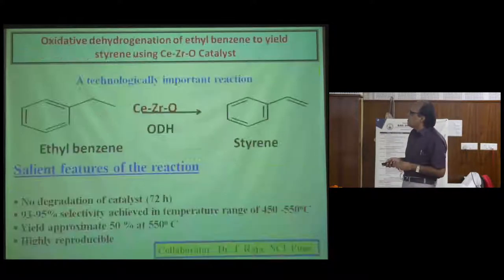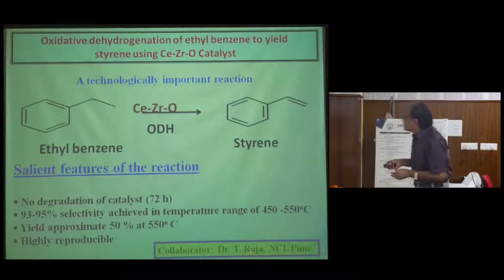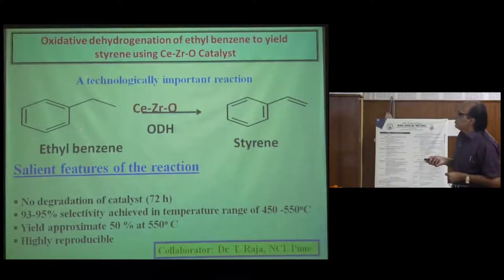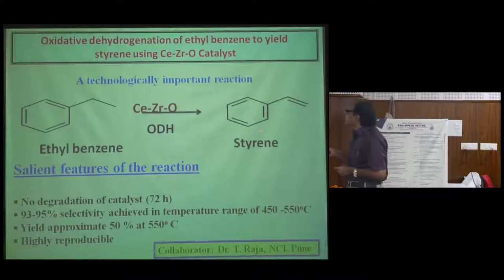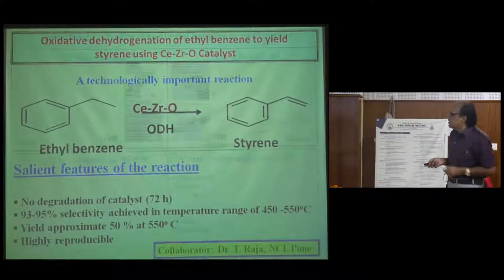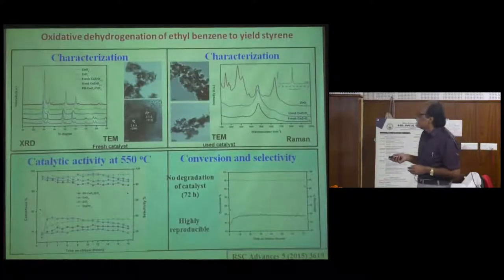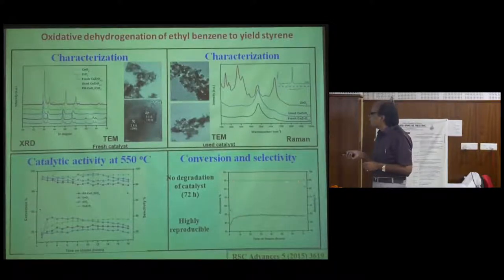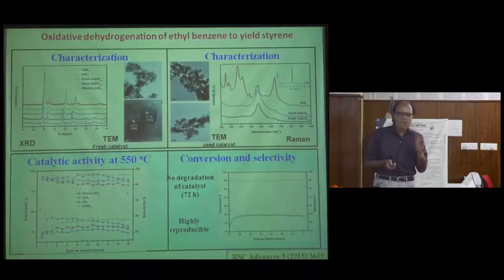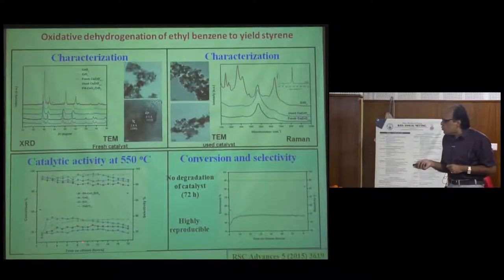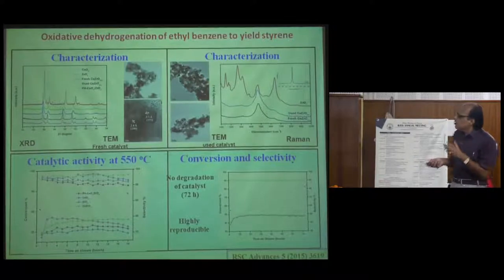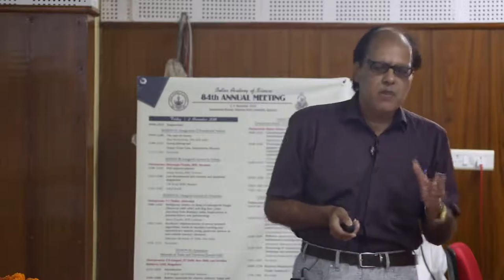A friend from NCL Pune, Dr. Gopinath, showed lots of interest. We collaborated to prepare compounds for dehydrogenation reactions. In ethylbenzene, if you knock out hydrogen you get styrene — the monomer for polystyrene, a very important material. This compound has shown excellent activity: for three to four days it can be used without any degradation in performance. In contrast, ceria, which has been used for ages, falls in performance within eight hours. So you need new materials that can be used in a green way for a prolonged period.